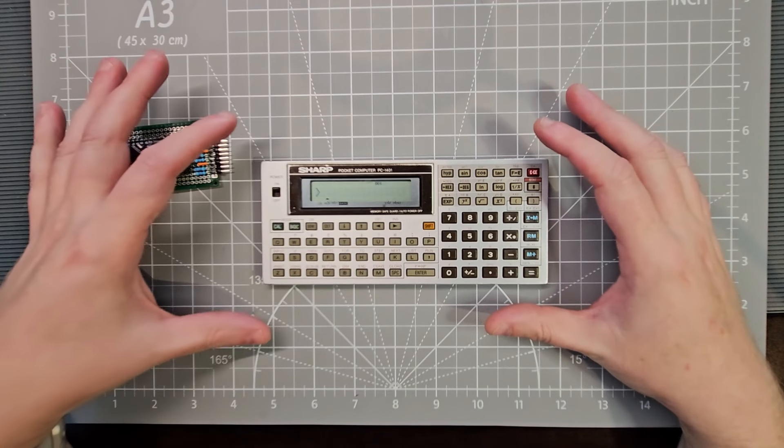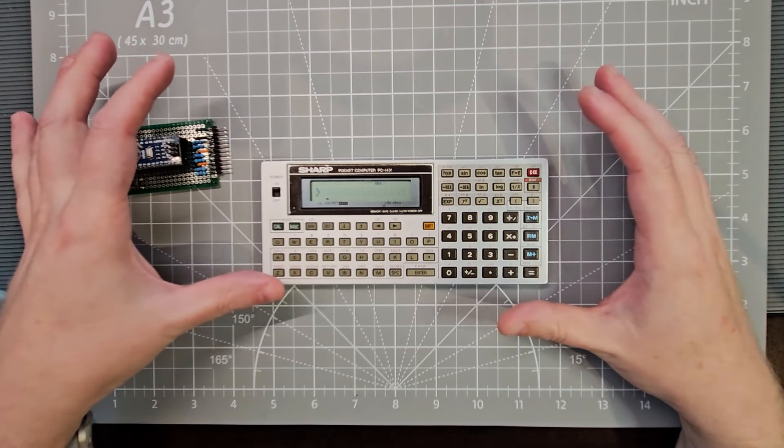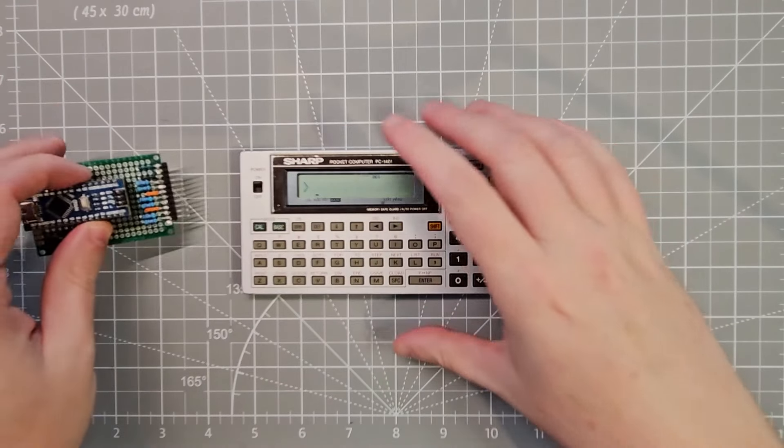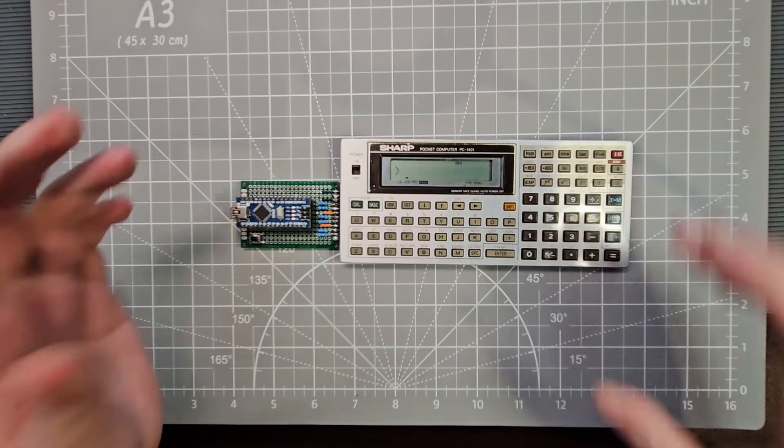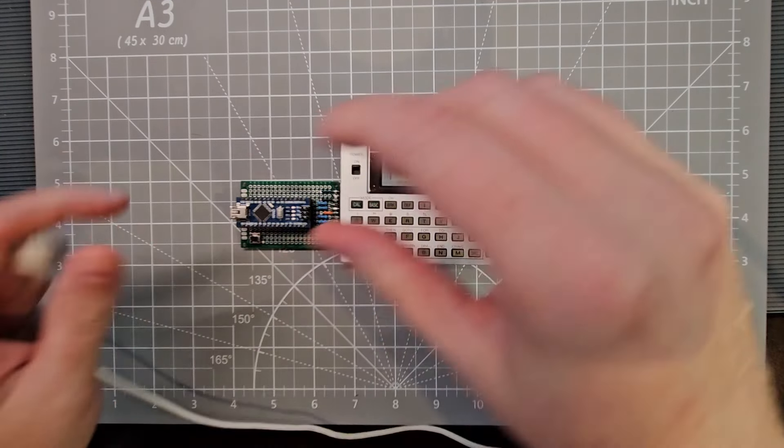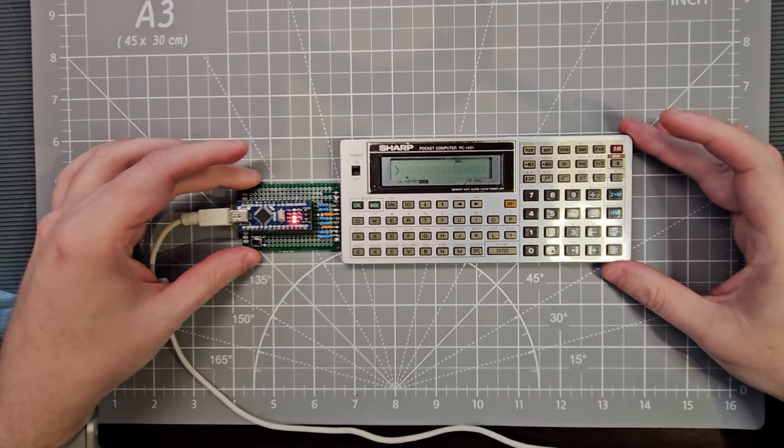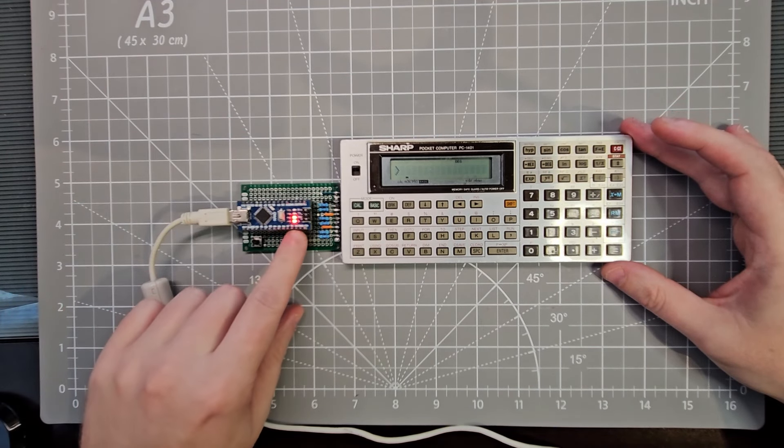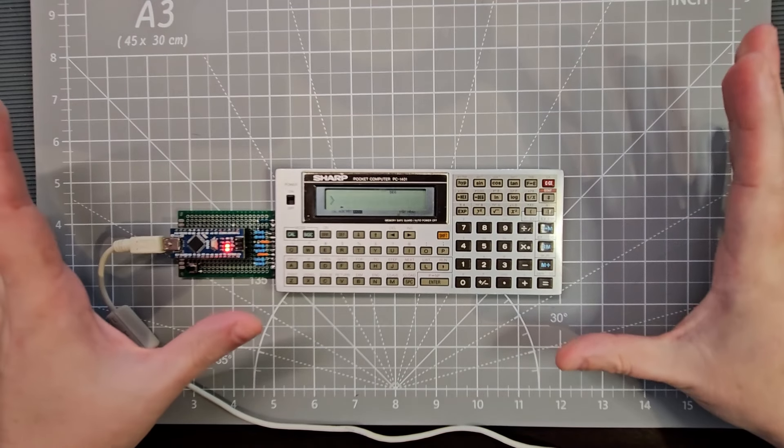I'm going to demonstrate how it works with this PC-1401 as a cassette emulator. All you have to do is plug it into the side of the pocket PC here and then a USB cable to your computer. And if it's working correctly, if the firmware on the Arduino is working correctly, then that light will be blinking and we're ready to go.